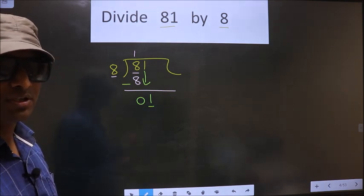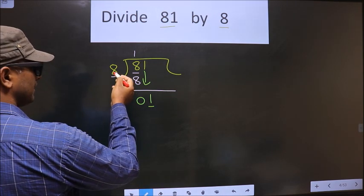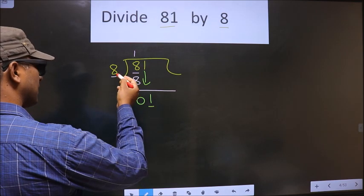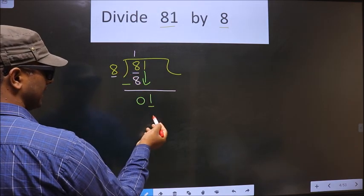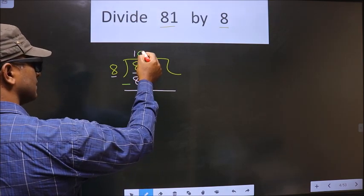Instead, what you should think about is what number you should multiply this with to get a number here. If we multiply by 1, we get 8 which is larger than this. So, instead we multiply by 0.